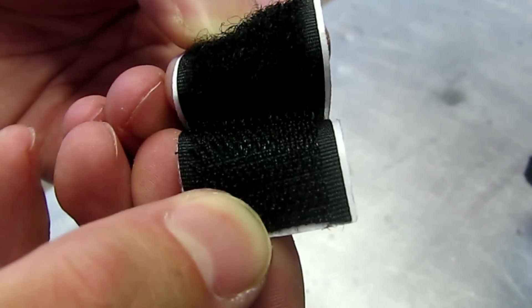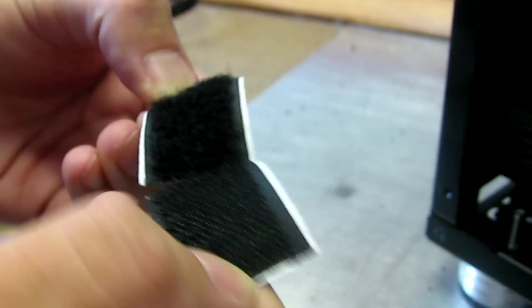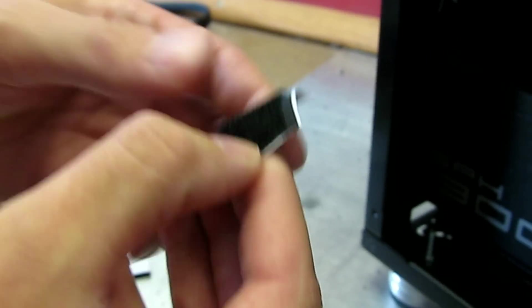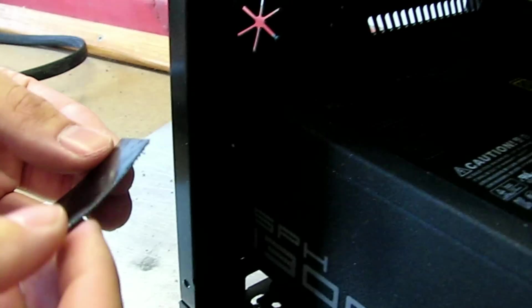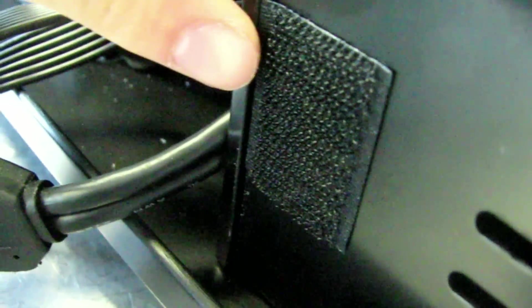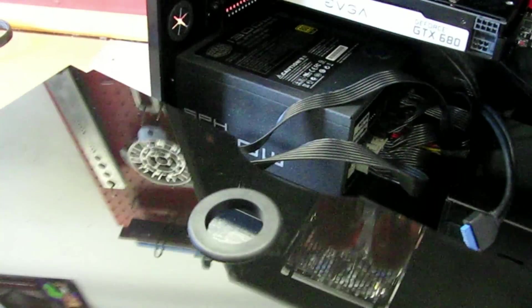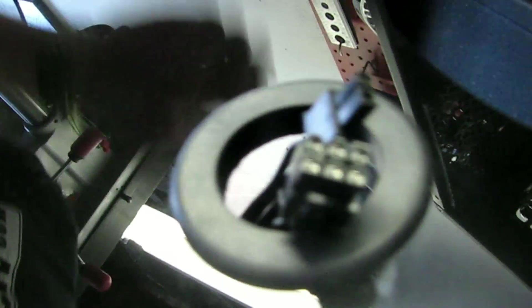I'm using Velcro tape here that you can get at any craft store or hardware store. We're going to take one side and put it on the top of the power supply and the drive cage. Then we're going to take the other side and put it on the inside of the shroud. We've got the Velcro attached to the inside of the shroud. The next step is going to be to run the cables up through the grommeted hole, and then we'll get it in the case.